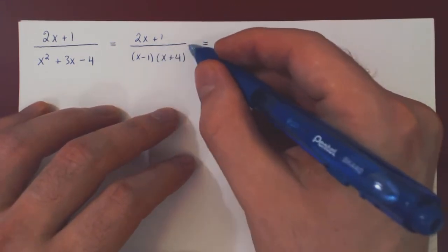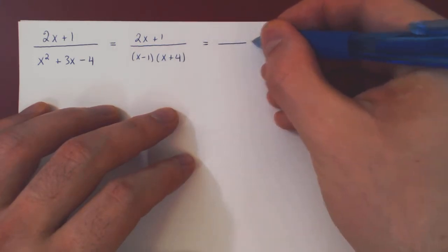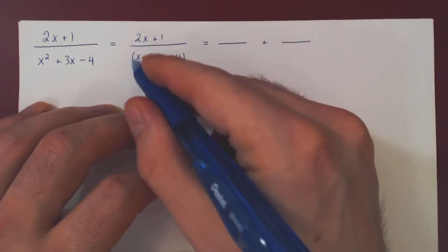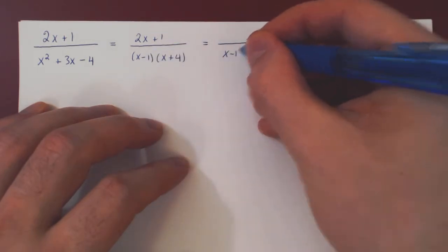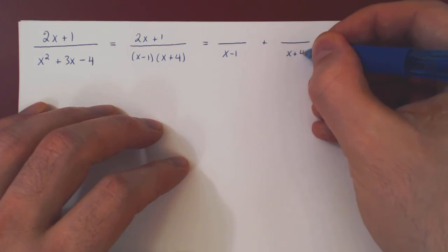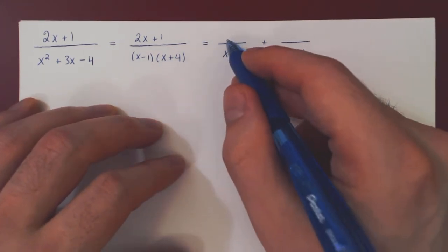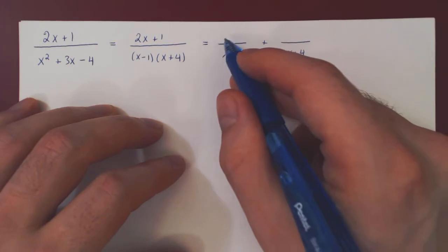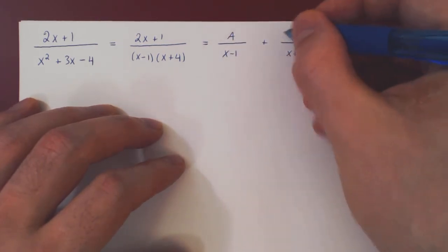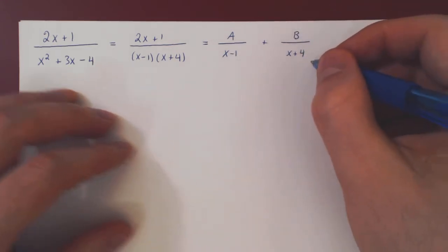Both exponents are 1, so each factor will give us a single partial fraction — one over x minus 1, the other over x plus 4. As both factors are linear polynomials, the numerator of each partial fraction is a single constant. So we write A over x minus 1 plus B over x plus 4.